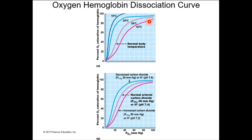Next, acid-base balance. What you need to understand about acids and bases is that moving too far in either direction is dangerous — you don't want to get too acidic and you don't want to get too basic. Basic is the same as alkaline. When we're acidic, the pH decreases. Less than 7 pH means acidic; more than 7 pH means basic or alkaline.